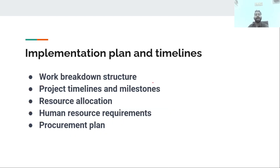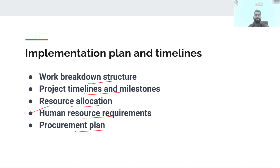For the implementation plan and timelines, we need a Work Breakdown Structure, project timeline, milestones, resource allocation, human resource requirements, and a procurement plan. We have to create and allocate resources and prepare all the relevant documents.